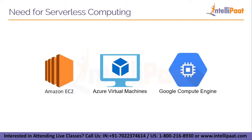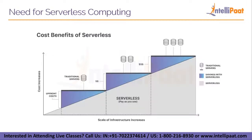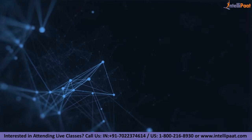Then came cloud computing, where a fixed number of servers or amount of server space could be rented remotely. Developers and companies who rented these fixed units of server space generally overpurchased to ensure that a spike in traffic or activity would not exceed their monthly limits and break their application. This means that much of the server space that gets paid for can go to waste. Some examples of virtual machines are Amazon EC2, Azure Virtual Machines, and Google Compute Engine.